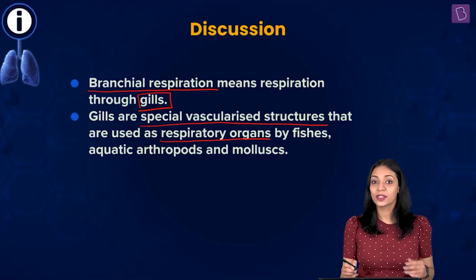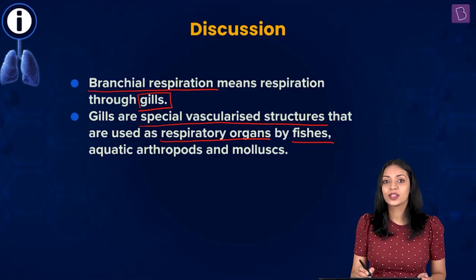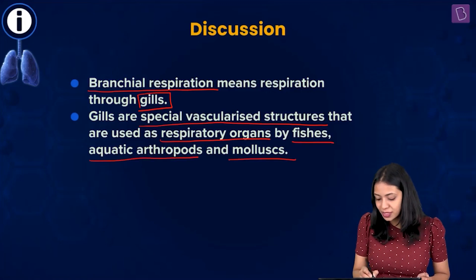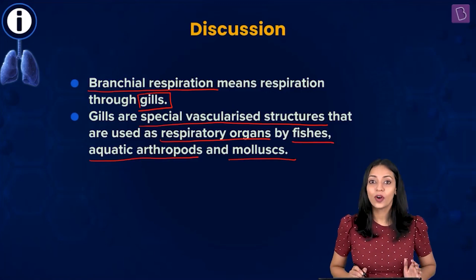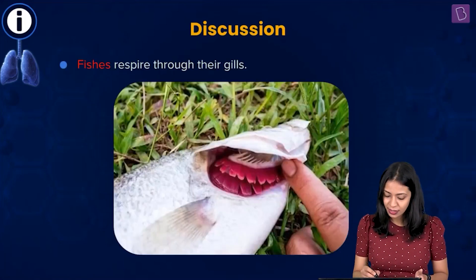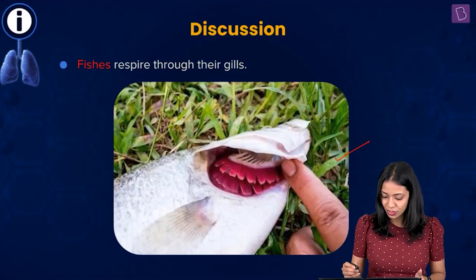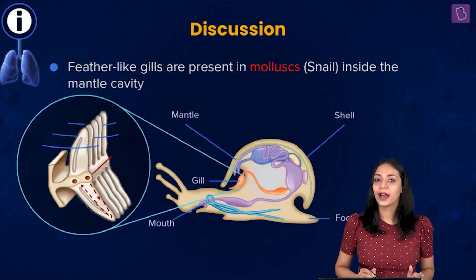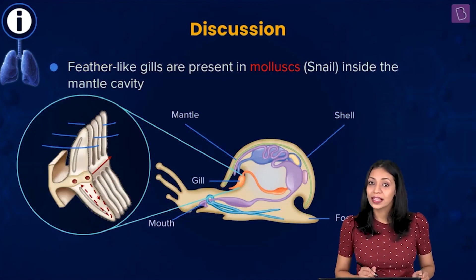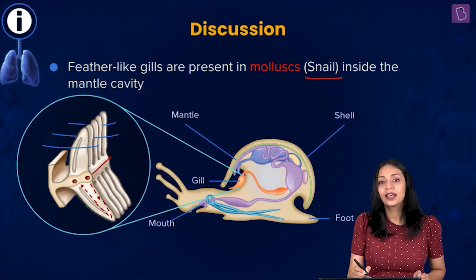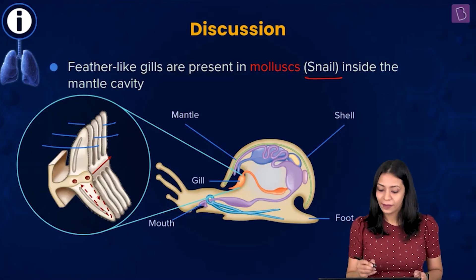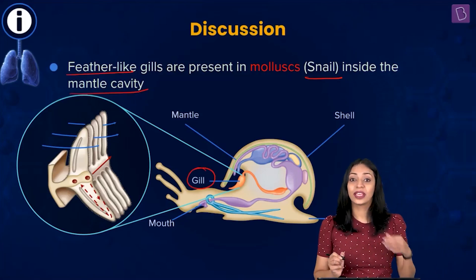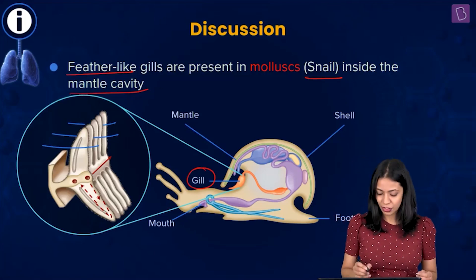Which organisms use gills for respiration? We know that fishes use gills for respiration. Apart from that, aquatic arthropods as well as mollusks also make use of gills. Here, fish gills are shown in the illustration. Mollusca is a phylum under the animal kingdom; an example is the snail, which has feather-like gills present in the mantle cavity.